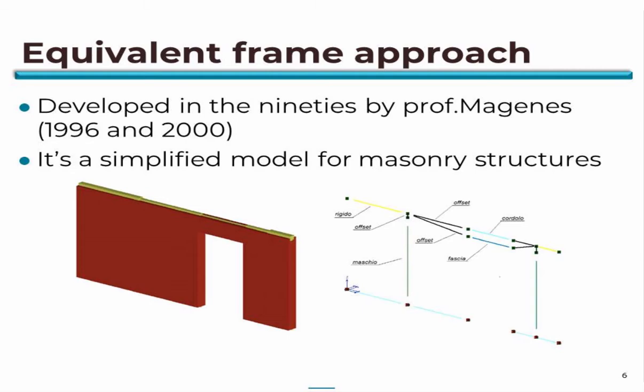The equivalent frame approach was developed in the 1990s by Professor Magenes, with his research in 1996 and in 2000. It is a simplified model for masonry structures, and it consists in transforming a masonry structure into a series of equivalent columns and beams connected by rigid elements and offsets, which allow consideration of the fact that the joints between masonry elements are not able to rotate. These studies were converted into code now implemented in PROSAP.